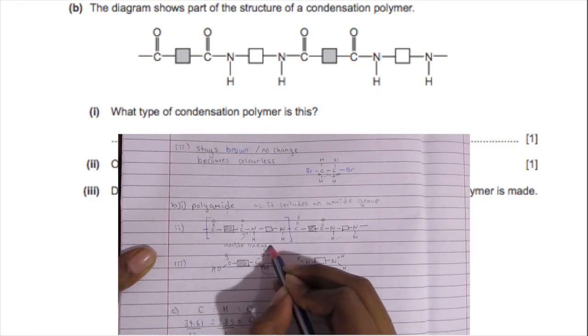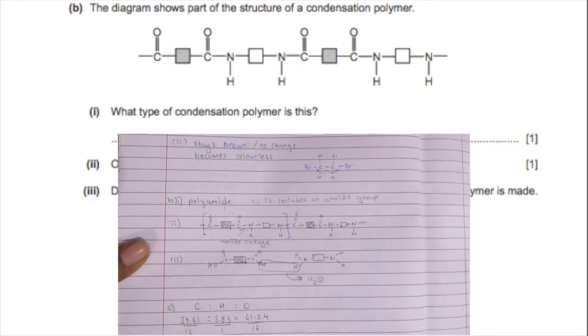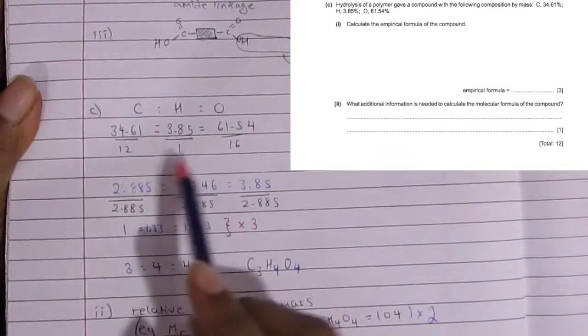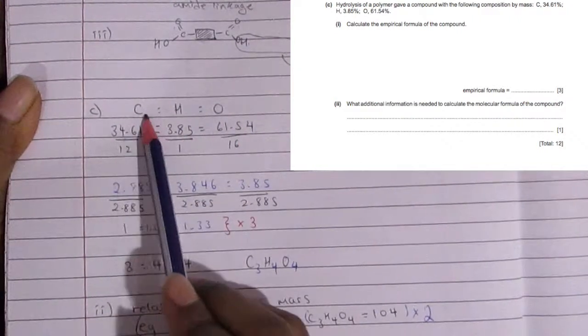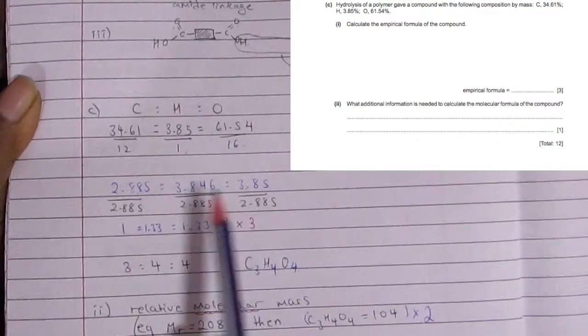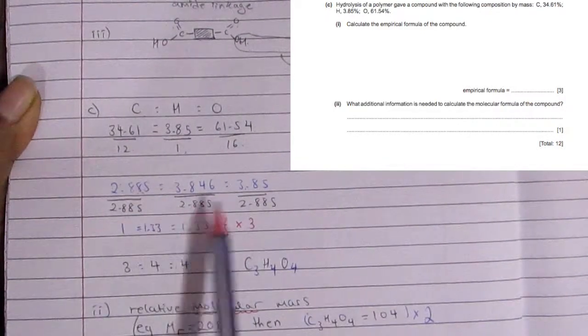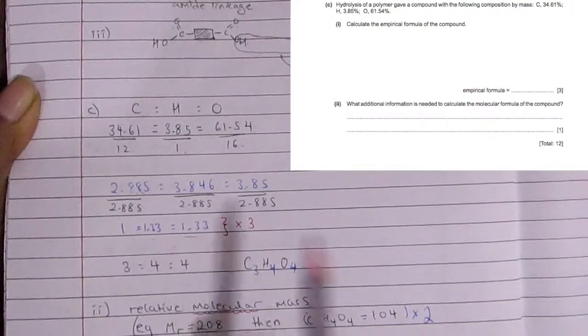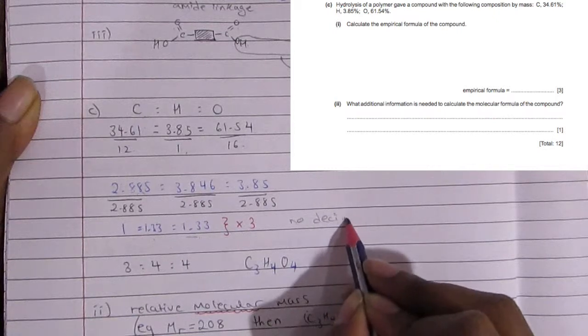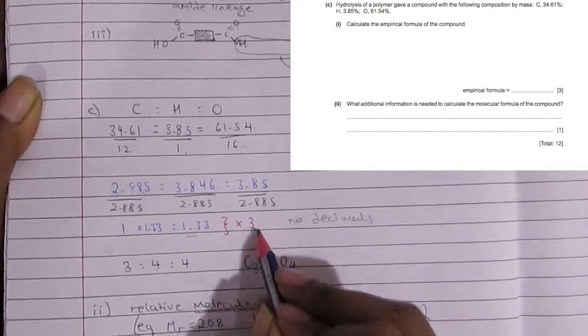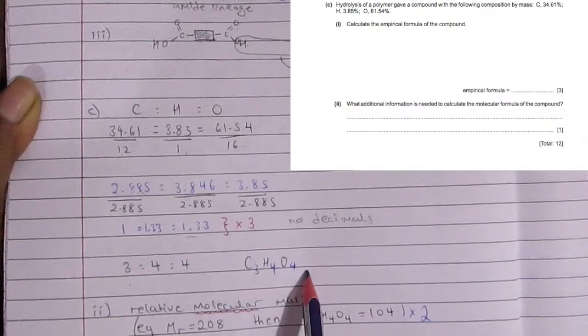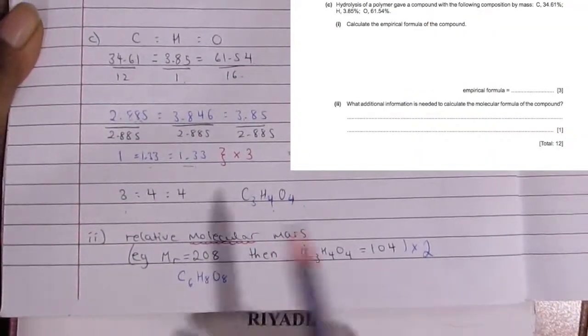Now for the final part you need to find the empirical formula. You have carbon, you have 34.61, 3.85 for hydrogen, and 61.54 for oxygen. You divide them by their relative mass, so 12, 1, and 16, you get these. Then you divide by the smallest which is 2.885, you get 1 to 1.33 and 1.33. You don't want any decimals so you're going to multiply the whole thing by 3 to get you whole numbers. So you have 3 to 4 to 4, so you have 3 carbons, 4 hydrogens and 4 oxygens.